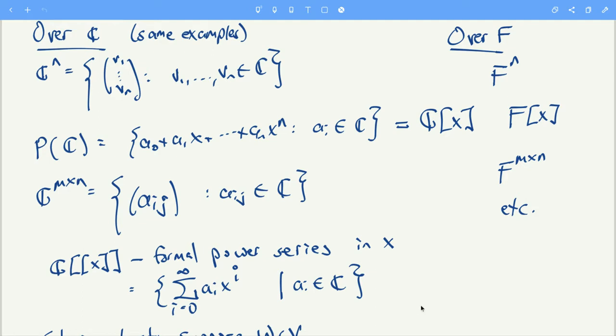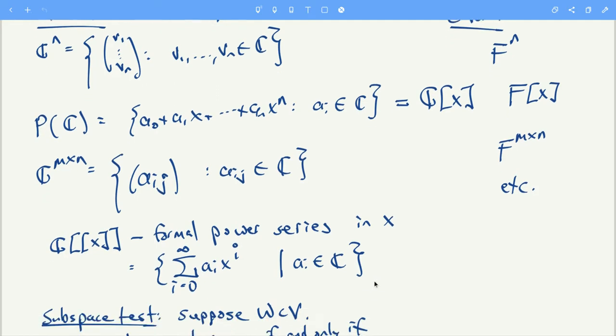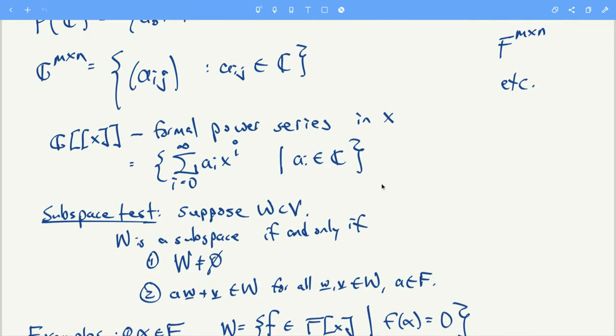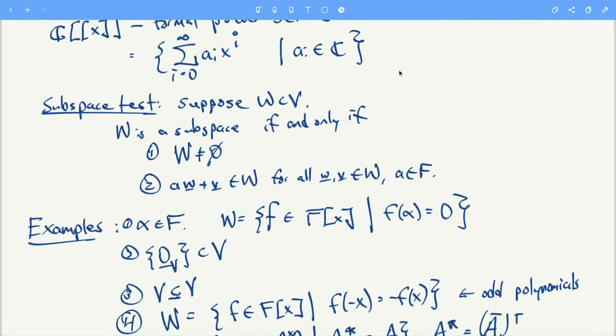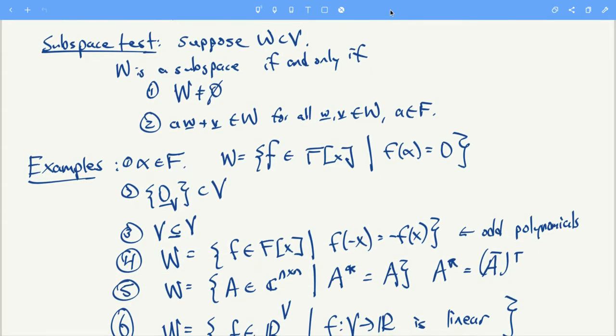So we've seen a lot of different examples. Those are a lot of different examples. Basically you just combine the scalars of the field in different ways and you get a lot of examples that way.